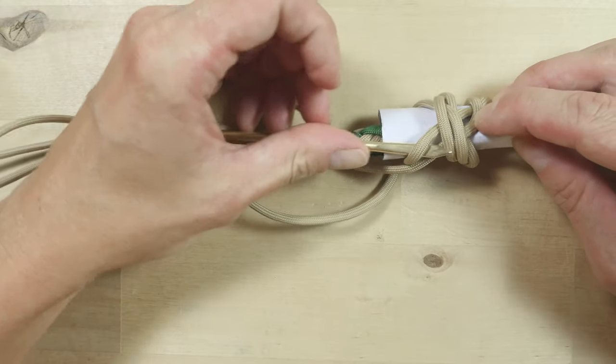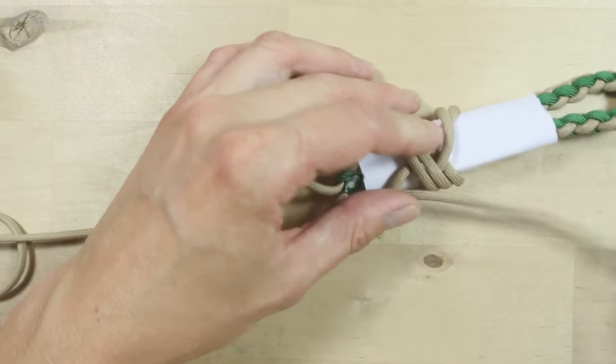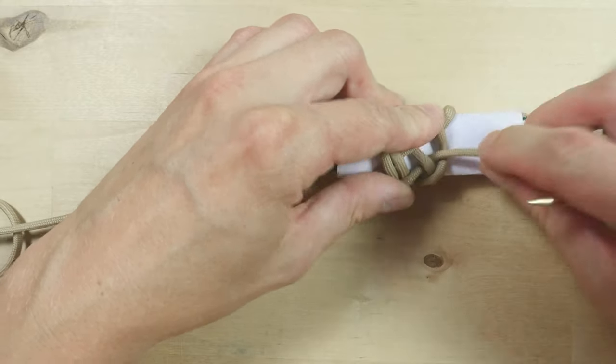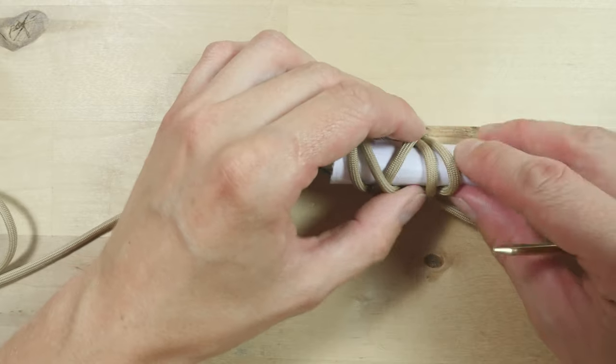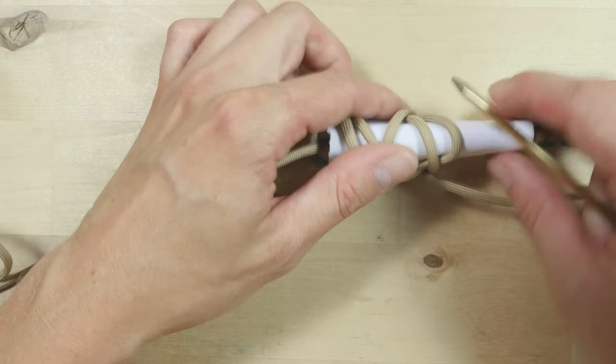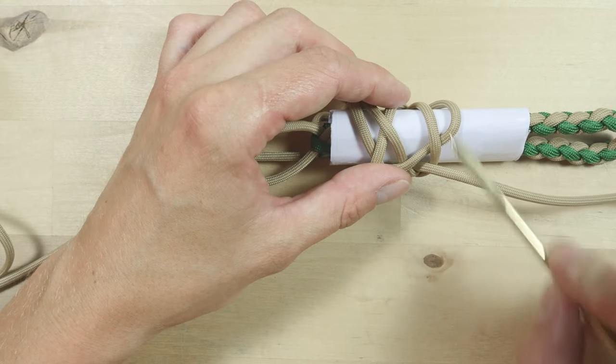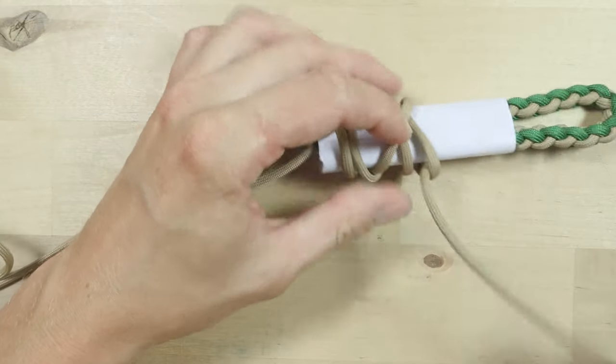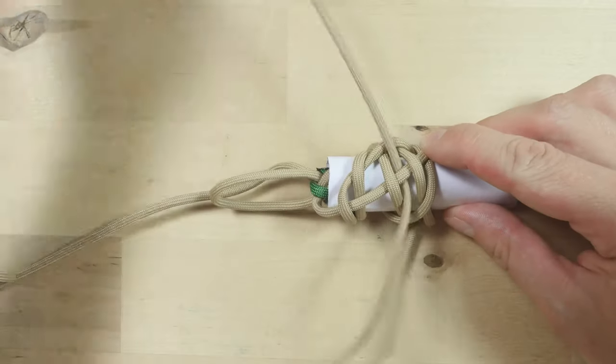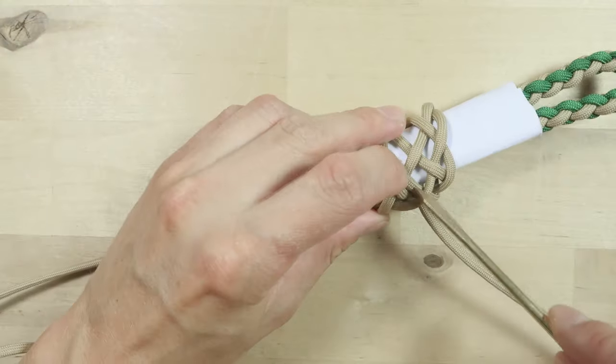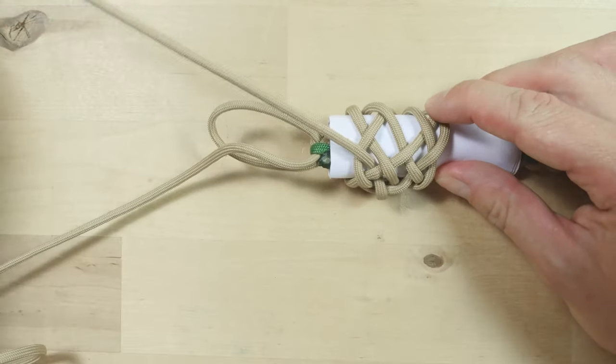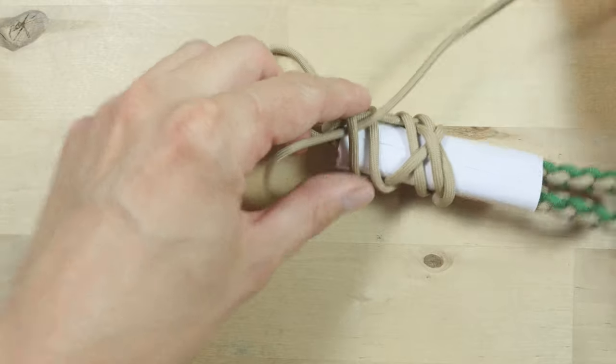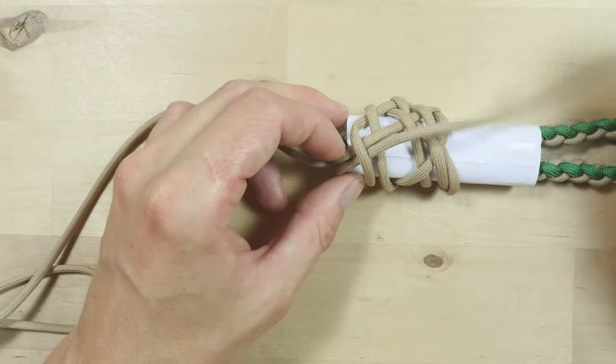We start under, over two, under, and over. Then, we are going to split these two parallel strands, traveling between them and doing the opposite, under, over, under, under, and over, like this. Then, place your working end alongside the standing end, and this completes our knot.